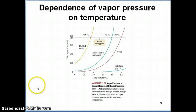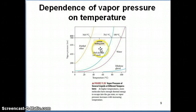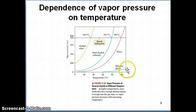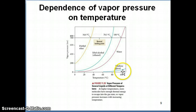The vapor pressure curve shown in the previous video is shown again here. I want to emphasize that some liquids are what we refer to as volatile, meaning they exert quite a large vapor pressure even at very low temperature. Some liquids are not as volatile, like water, and then you have things like ethylene glycol, which is really not volatile because it barely has any vapor pressure even at quite high temperature.